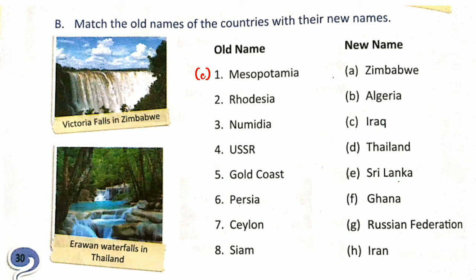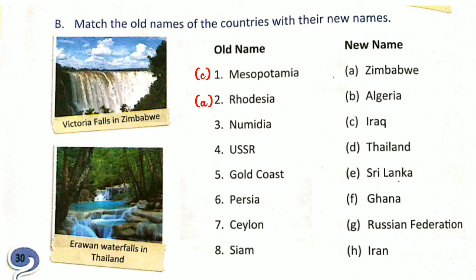Now number 2, Rhodesia. Rhodesia is the old name of Zimbabwe. Zimbabwe is the new name of Rhodesia. Here we also see Victoria Falls in Zimbabwe. Rhodesia is the old name and now its new name is Zimbabwe.